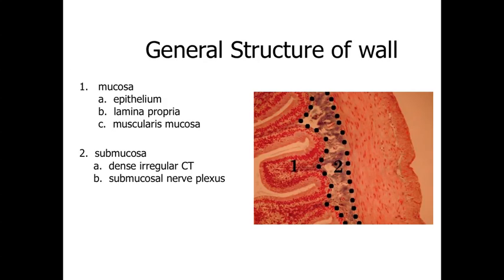From a physiological standpoint, what's in the lumen is the equivalent of being outside of the body. So it's important to keep in mind that when we need to absorb materials — the nutrients — they have to pass through the epithelial lining and into the connective tissue, into the blood vessels, so they can be transported throughout the body.